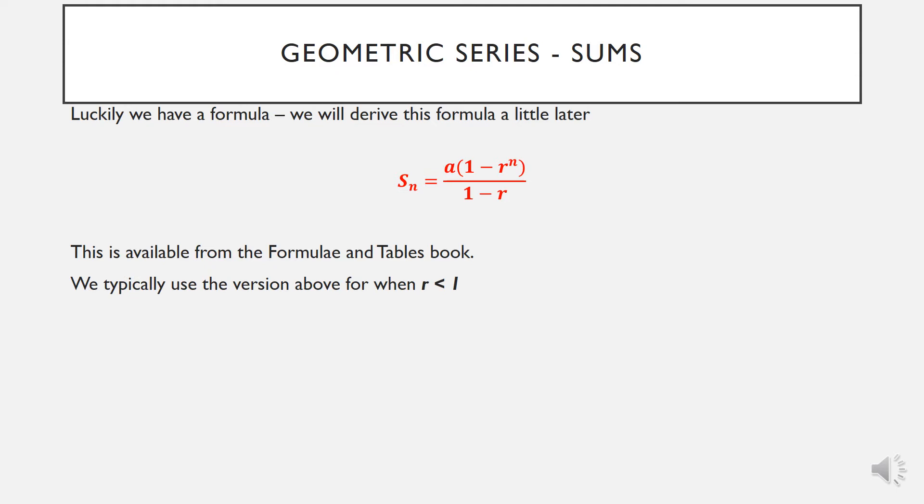We use the version above typically when our value of r, the common ratio, is less than 1. That means for series where the values are getting smaller as you go on. It is possible to use a slightly different version when r is greater than 1, when the numbers are getting much larger. It can be useful to multiply the numerator and denominator by minus 1. You're not changing it essentially, it's mathematically the same. It appears as if the 1 and the r's have switched positions. All this does is it avoids generating negative values when you're calculating. So you use whichever version is suitable to avoid negative values.